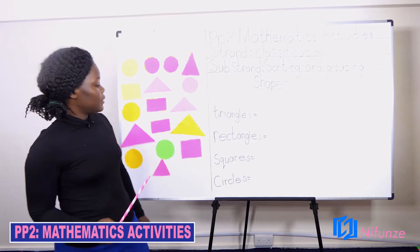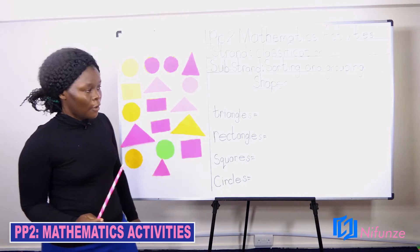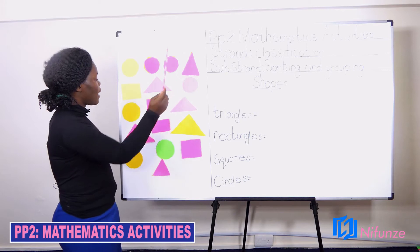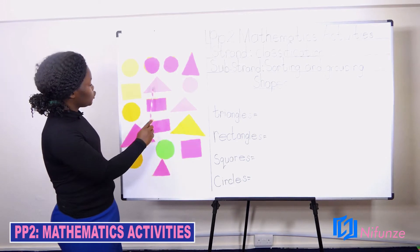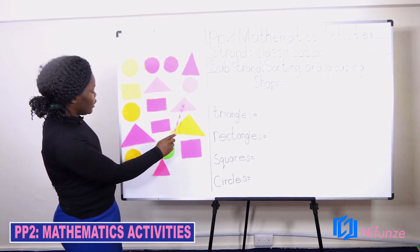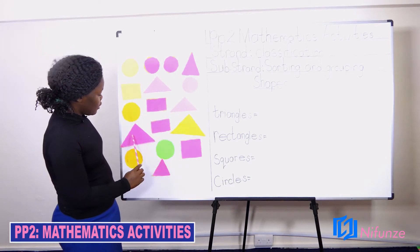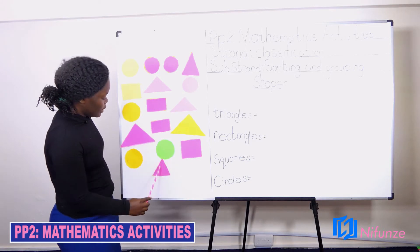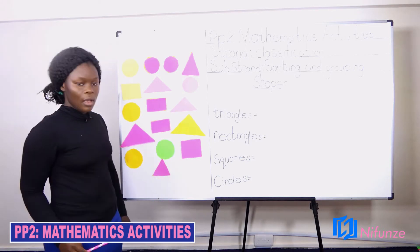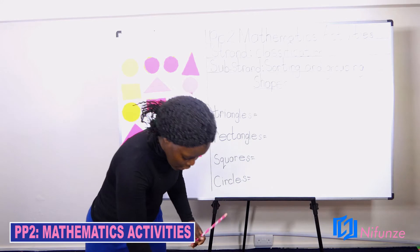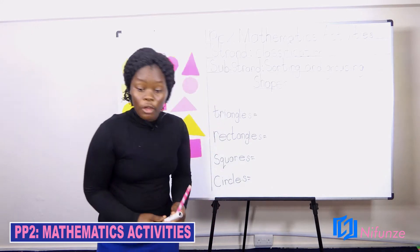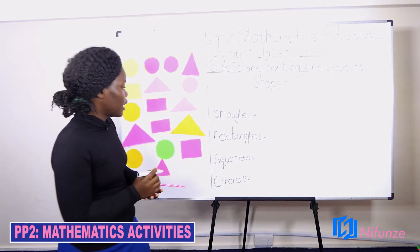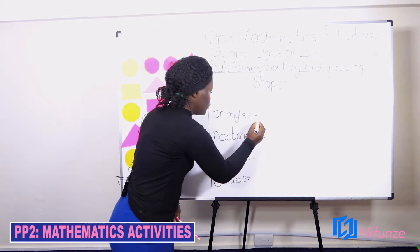Do you see another one? Okay, we can count again. One, two, three, four, five, six. We have seen six triangles. Now the teacher is going to write six to indicate the number of triangles.